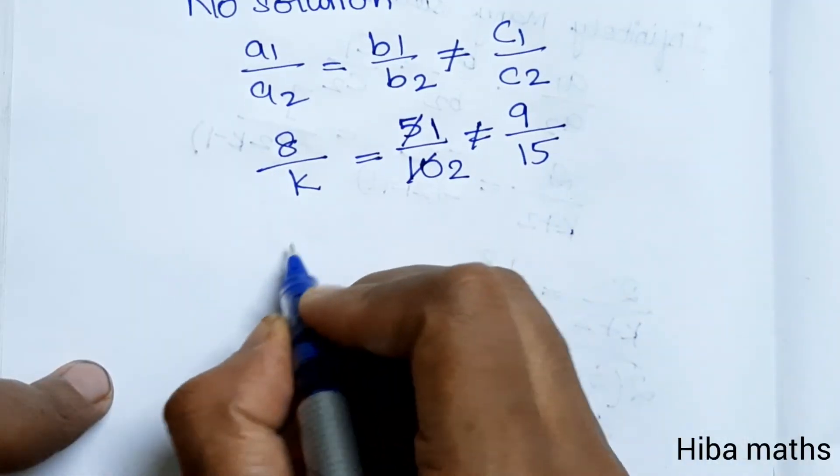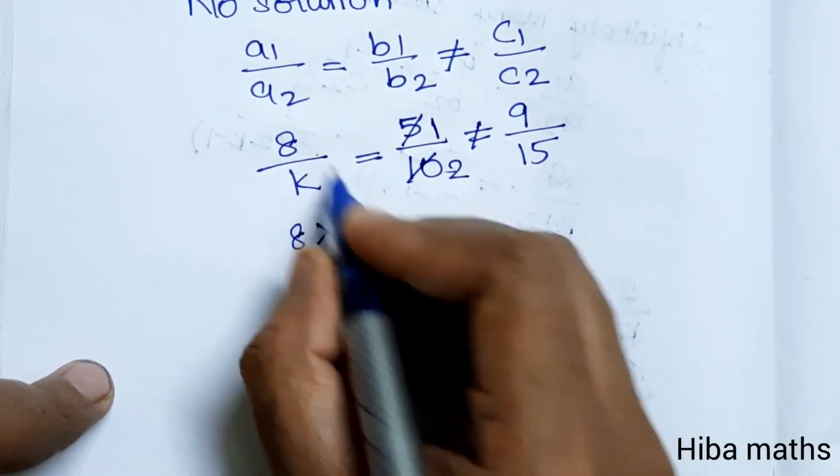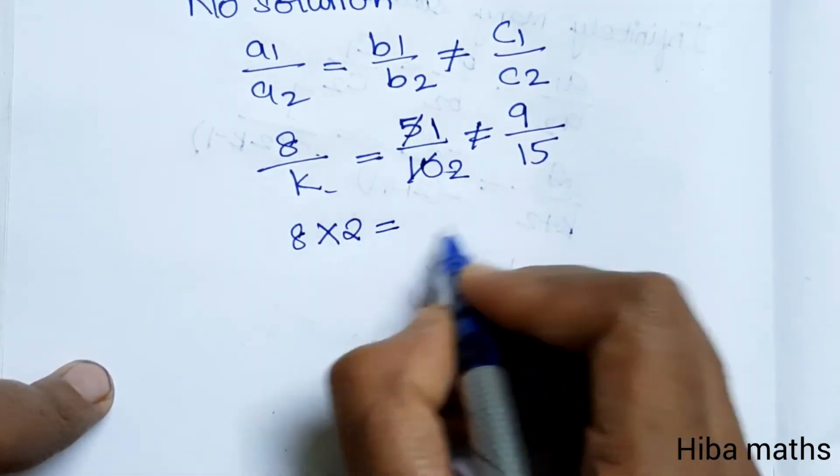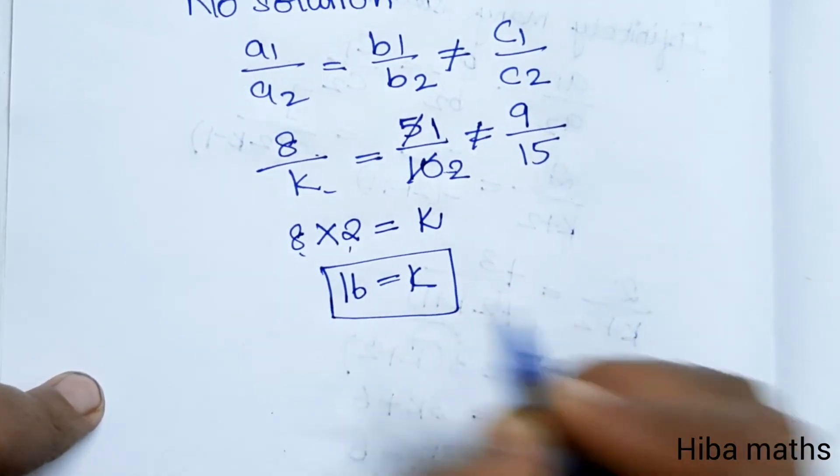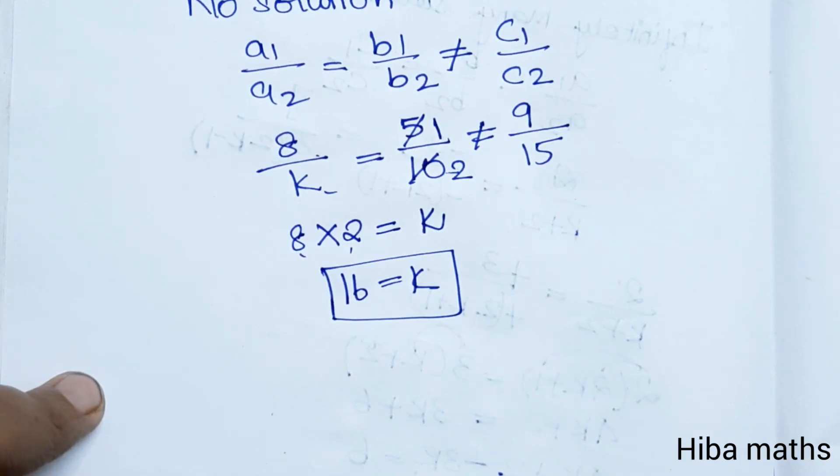Simplifying 5/10 to 1/2, we get 8/k = 1/2. Cross-multiplying: 8 × 2 = k, which gives k = 16.